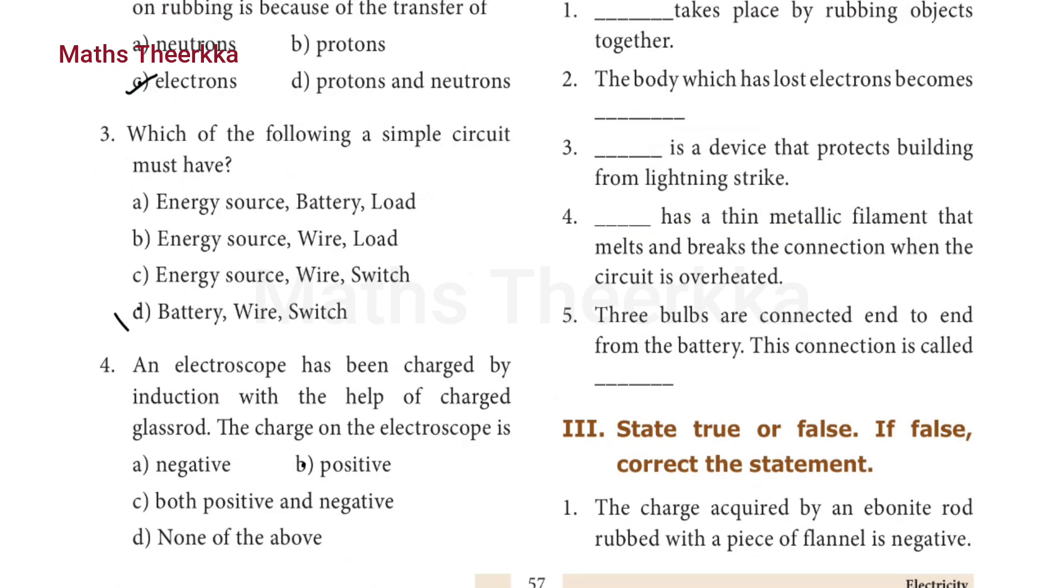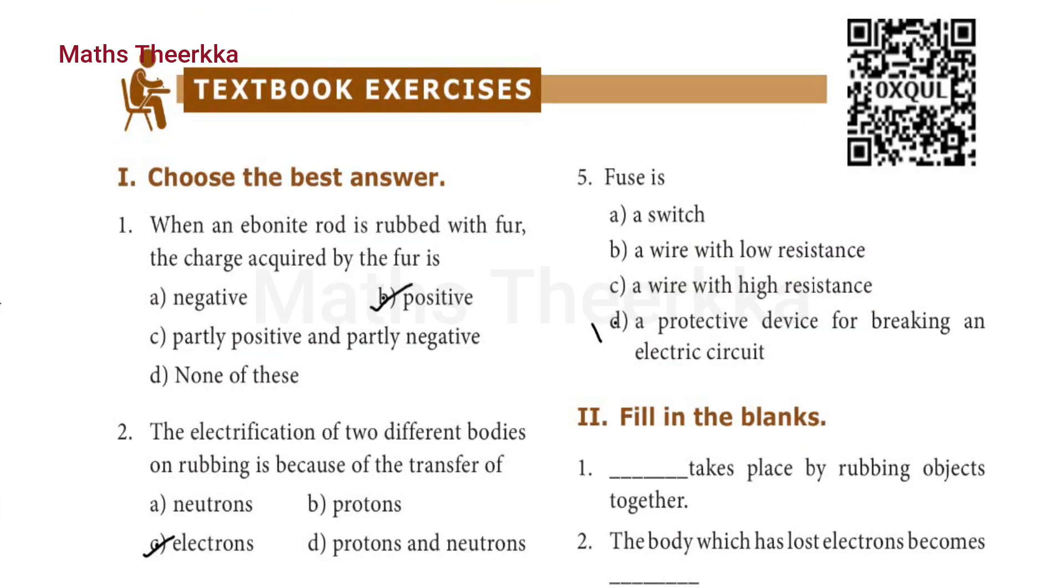Fourth one: an electroscope has been charged by induction with the help of charged glass rod. The charge on the electroscope is b) positive. Fifth one: fuse is option d) a protective device for breaking an electric circuit.